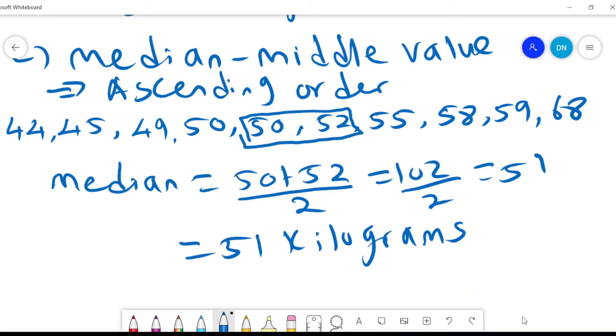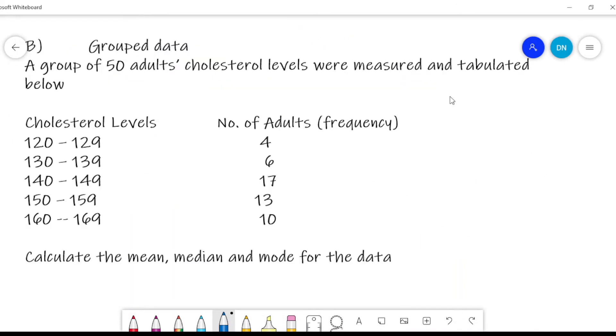So the next step is to look at grouped data. For the grouped data, we are told that a group of 50 adults' cholesterol levels were measured and tabulated below. So those who had a cholesterol level between 120 and 129, there were 4 adults. Those who had 130 to 139, there were 6. And those who had between 140 to 149, there were 17. Those who had 150 to 159, there were 13. And those who had 160 to 169, there were 10. And therefore, if we calculate this, we see that we had a total of 50 adults. Now we are told to calculate the mean, the median, and the mode for the data.